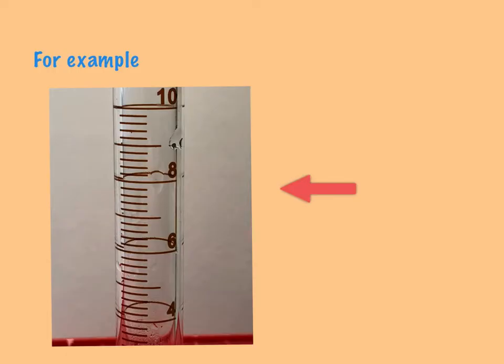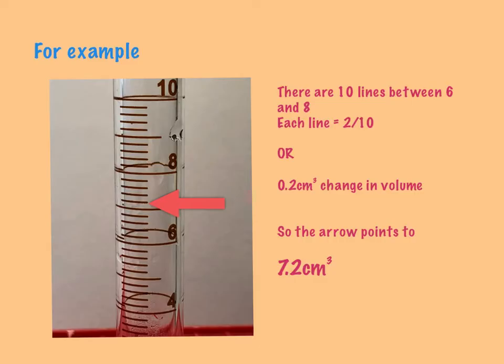Let's look at this one. I've taken a measuring cylinder that goes to a maximum of 10, so I can't measure anything more than 10. If I'm measuring a small amount of liquid, I can use this. If I go between 6 and 8, I've got 1, 2, 3, 4, 5, 6, 7, 8, 9, 10 divisions. Each of those lines is equal to 2 on 10, because it goes between 6 and 8—that's 2 divided by 10, or 0.2.